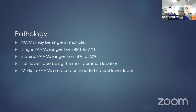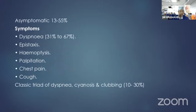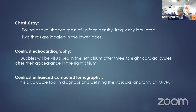PAVM may be single or multiple, with the left lower lobe being the most common location. About 13 to 55% are asymptomatic; symptoms include dyspnea, epistaxis, hemoptysis, palpitation, chest pain, and cough. On X-ray, a round or oval-shaped mass of uniform density, frequently lobulated, is seen; two-thirds are located in the lower lobe. In contrast echocardiography, bubbles are visualized in the left atrium after three to eight cardiac cycles.